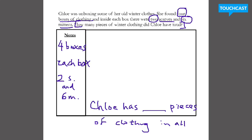All right, pause this video now and go ahead and solve — how many pieces of clothing does Chloe have in all? All right, let's take a look. So the easiest thing, once again, would be to draw.